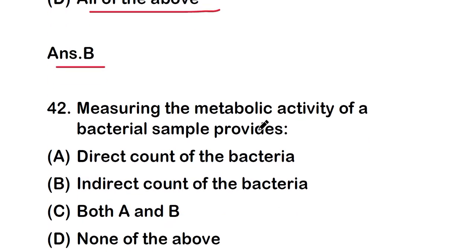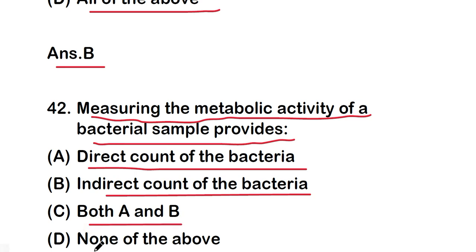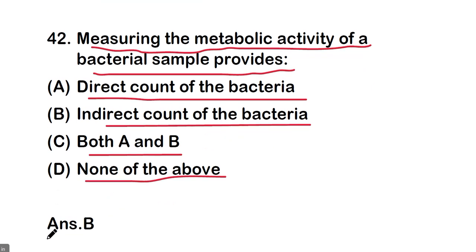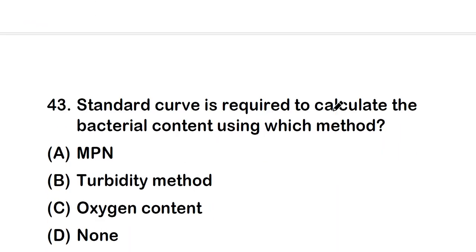The spectrophotometer instrument is used to determine the turbidity and indirectly the bacterial count of a given sample. Next question: measuring the metabolic activity of a bacterial sample provides — direct count, indirect count, both, or none? The right answer is option B — indirect count of the bacteria.